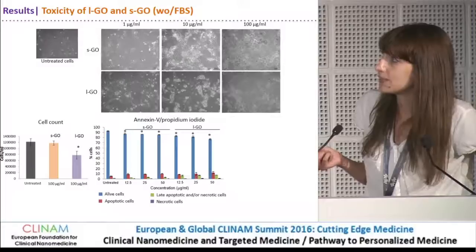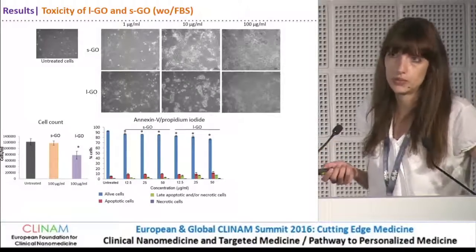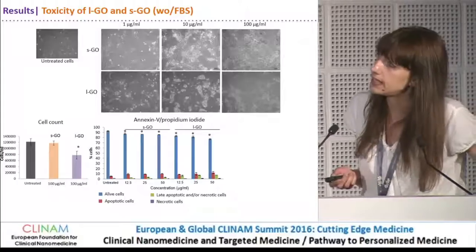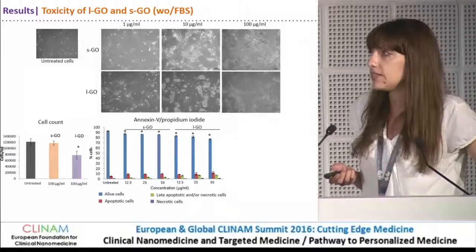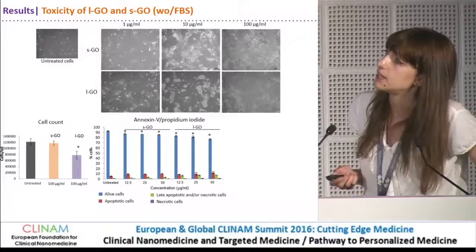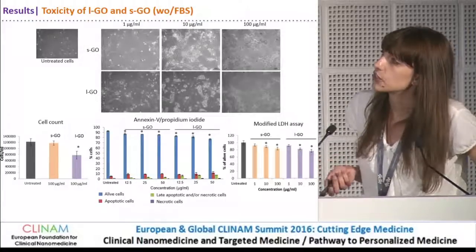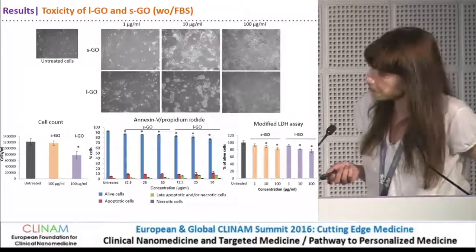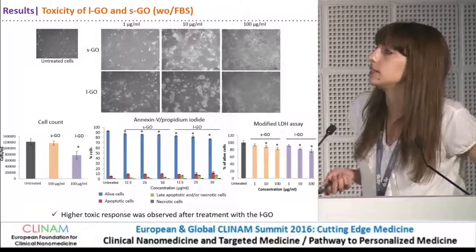We then focused on the cells that remained on the layer — not the ones that were detached. For this we used an Annexin-5/propidium iodide assay, which showed a slight but significant dose-dependent decrease in cell viability after treatment with both types of material. This was furthermore confirmed using a modified LDH assay, also showing a dose-dependent slight but significant decrease.